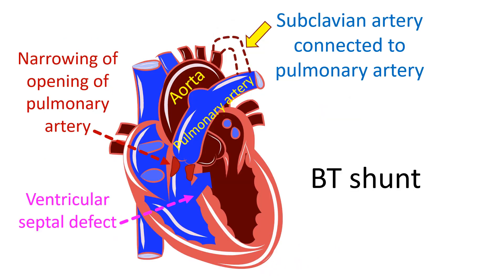The Blalock-Taussig shunt, known in short as BT shunt, creates a connection between a branch of the aorta and a branch of the pulmonary artery. Blood in the aorta at high pressure flows into the pulmonary artery at lower pressure. This increases blood flow to the lungs and improves the oxygen content of blood reaching the left atrium, the left upper chamber. In turn, blood from the left atrium reaches the left ventricle and is pumped into the aorta. Hence BT shunt increases the oxygen content of blood reaching the body and decreases cyanosis.